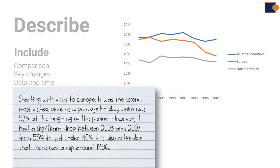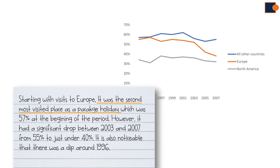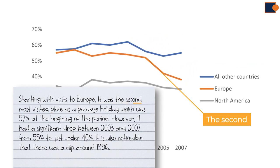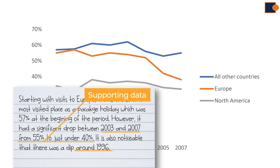For instance, in this sample, it states it was the second most visited place as a package holiday, so it is comparison. Then supporting with the data which was 57% at the beginning of the period. Then mention key changes. So in this sample it says it had a significant drop, or there was a dip. So these are some of the key changes about Europe. And between 2003 and 2007, from 55% to just under 40%, or around 1996, are the supporting data.